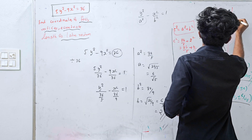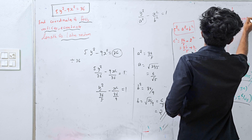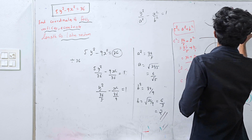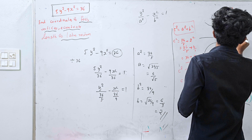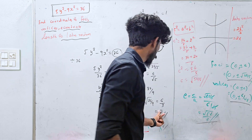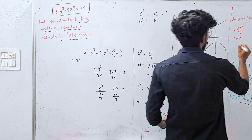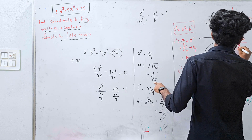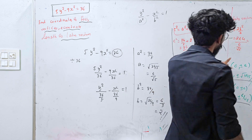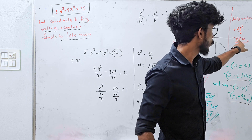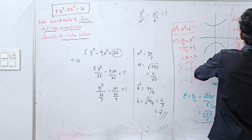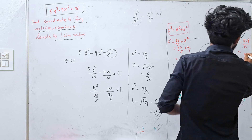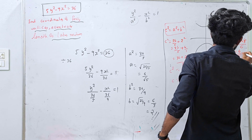Length of latus rectum. The length of latus rectum is 2b²/a. So 2 into b² (b=2, b²=4): 2 into 4 = 8, divided by a = 6/√5. This brings √5 to the numerator, giving 8√5/6, which simplifies to 4√5/3.